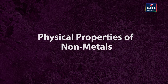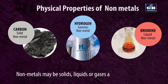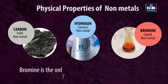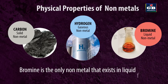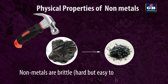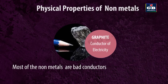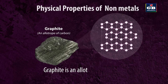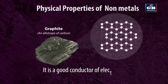Physical properties of non-metals: Non-metals may be solids, liquids or gases at room temperature. Most non-metals are either solids or gases. Bromine is the only non-metal that exists in liquid form. Non-metals are brittle — hard but easy to break or crack. Most non-metals are bad conductors of heat and electricity, except graphite. Graphite is an allotrope of carbon and is a good conductor of electricity.